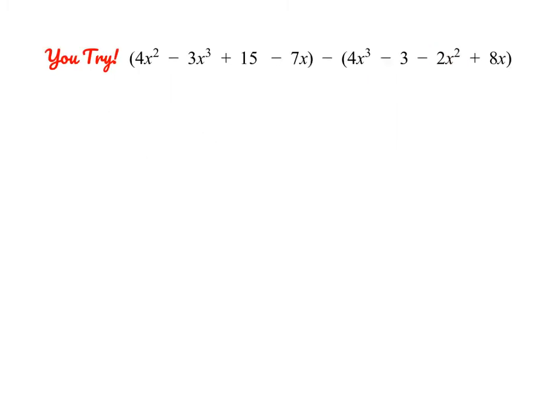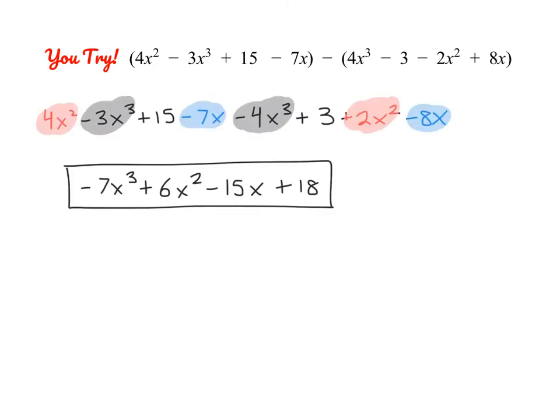Here I have another you-try. Pause the video and give it a try, and when you're ready hit play to check your answer. Go ahead and check. Remember, whenever we're subtracting, I really recommend that you rewrite the problem to reflect that every single term has been subtracted. So it's negative here, positive 3, positive 2x squared, and negative 8x. From here it's just a matter of combining like terms, making sure your answer is in standard form.